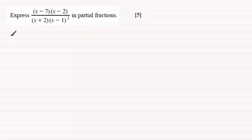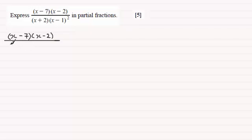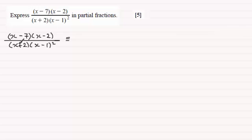So for this one we'll just copy down the fraction. We've got to express (x minus 7)(x minus 2) all divided by (x plus 2)(x minus 1) squared in partial fractions. So what I do is say that this is identical to — and first of all we've got our first linear factor in the denominator, x plus 2, so that's going to give rise to the partial fraction: a constant — let's say it's A — divided by x plus 2.